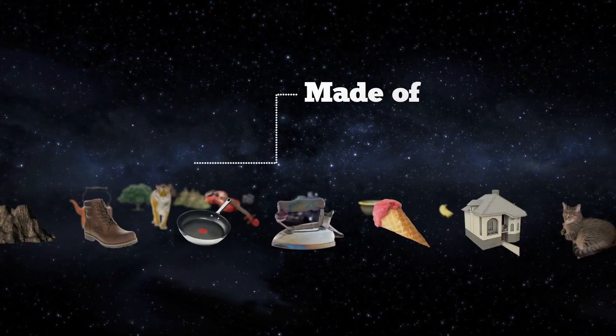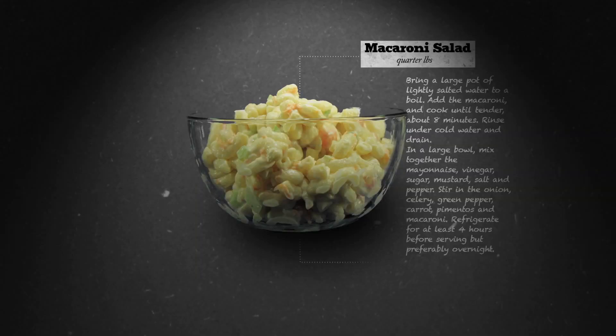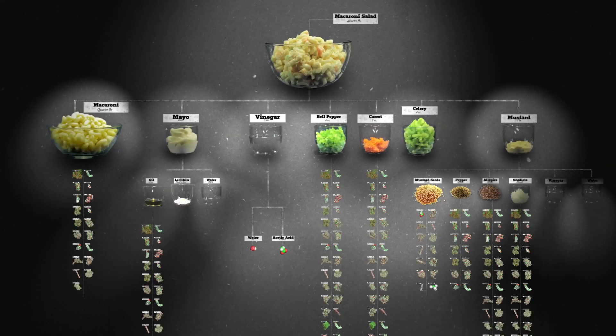We already know that the world is made of things, things like cats and macaroni salad. And macaroni salad is made of things like mayo and mustard and celery, which are all made of molecules.